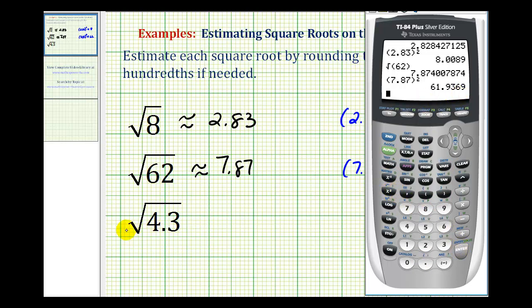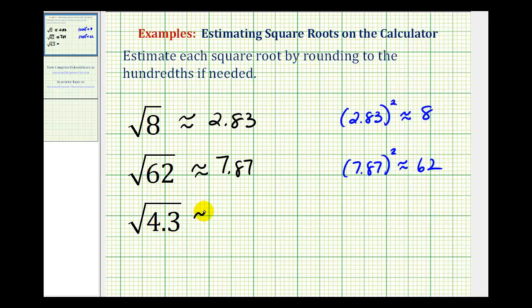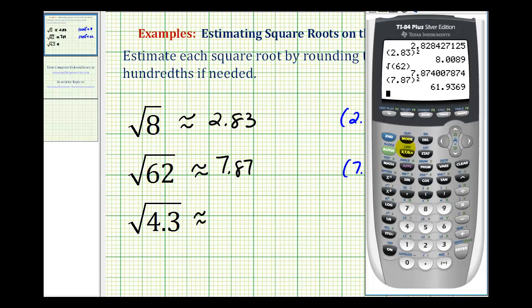And then for the last example, we have the square root of 4.3. Well 4.3 is close to four. The square root of four is equal to two. So we're going to expect this value to be a little bit more than two. So second x squared, 4.3.